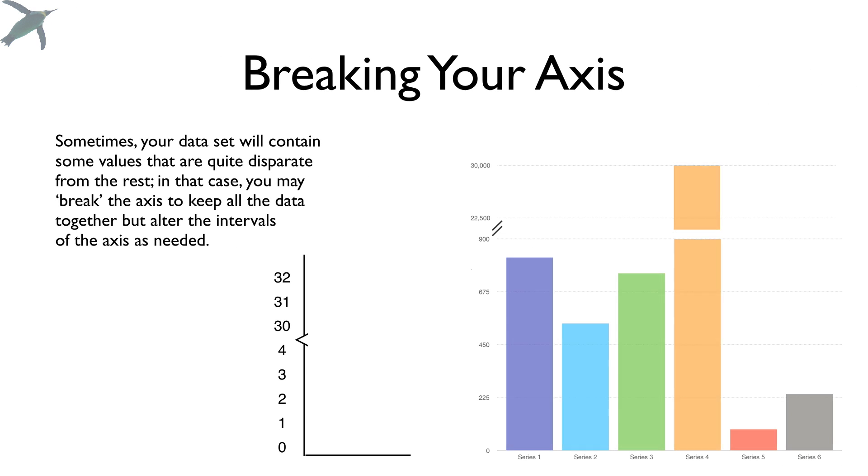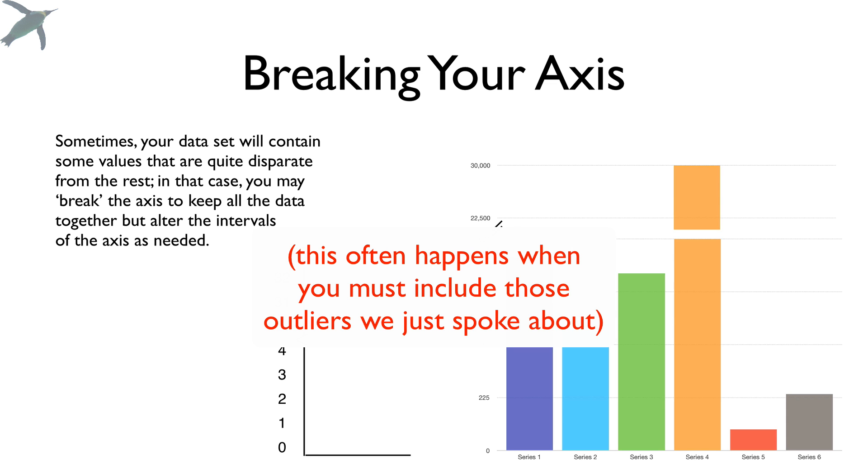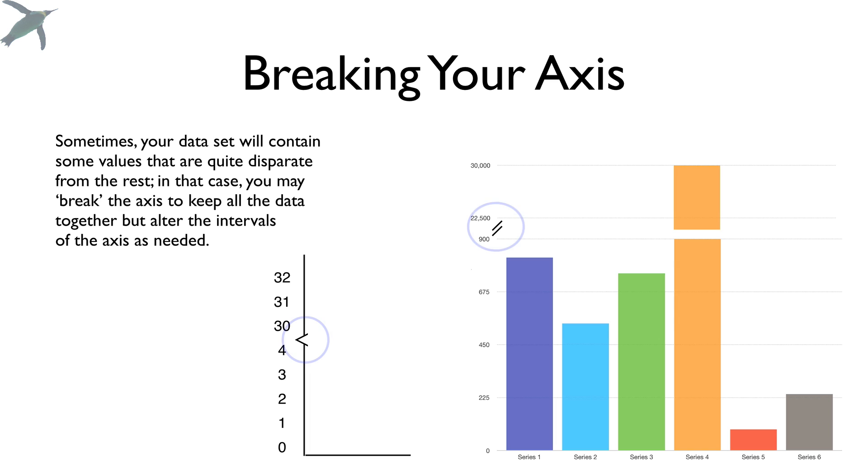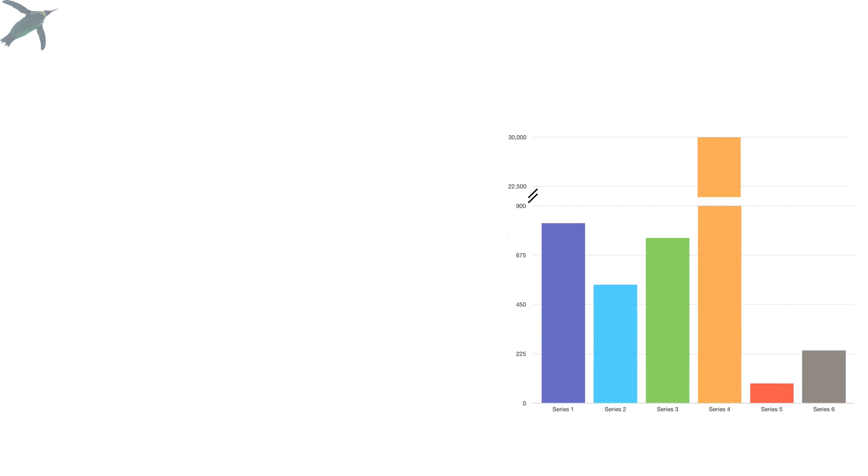Breaking your axis. So a lot of times you end up in a situation like this, where your data set will contain some values that are really far away from the rest. And when that happens, the best thing to do is put a break in your axis. And I've shown a couple different ways that we show that. And probably the best way for me to show you why you would want to do this is to show you the same data set expressed with and without the break.